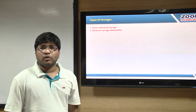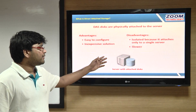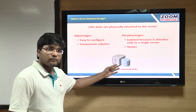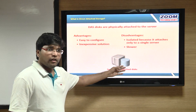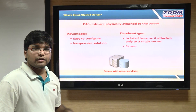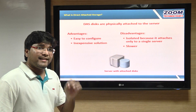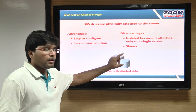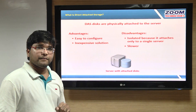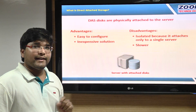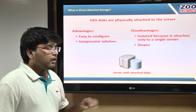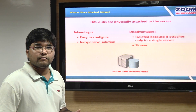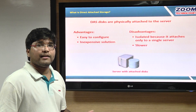Now direct data storage means — you can see on the display — we have a server here where we have a bunch of hard disks connected to it. Whatever data you are storing in this machine, everything will be stored in the same device. The disadvantage here is, if this server fails, the hardware is gone, all the data is gone, and you can't access it.